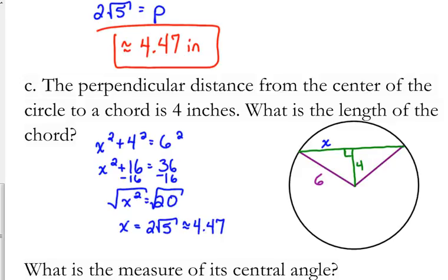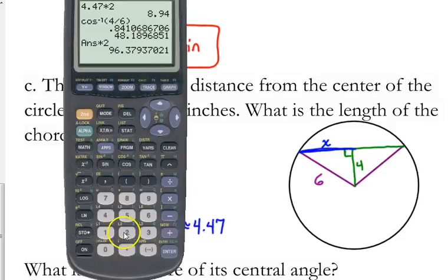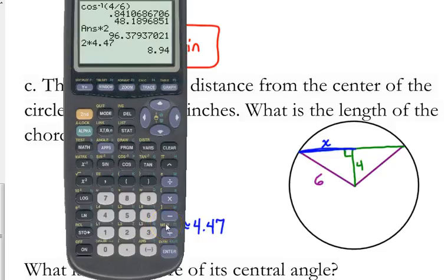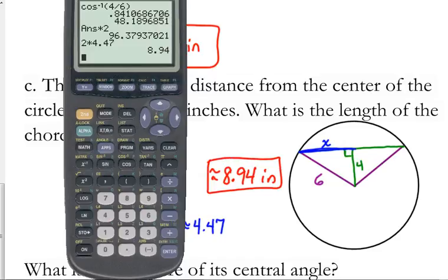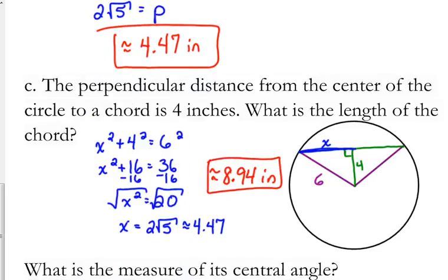But that's not the answer to the question. It wants to know the length of the chord. That was only half of the chord. So we'll have to double it. So 2 times 4.47, 8.94 inches is approximately the length of the chord.